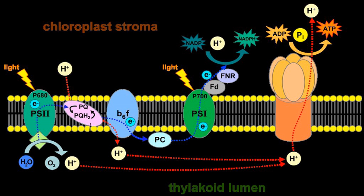Activities of the electron transport chain, especially from cytochrome B6F, lead to pumping of protons from the stroma to the lumen. The resulting transmembrane proton gradient is used to make ATP via ATP synthase.